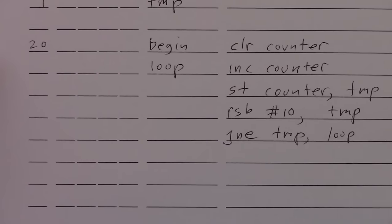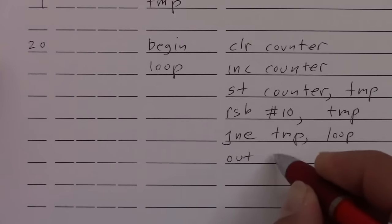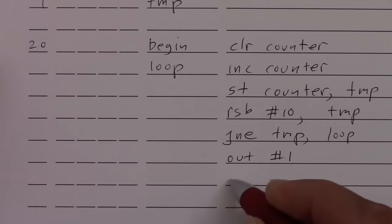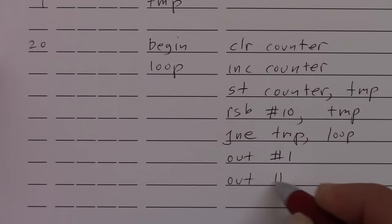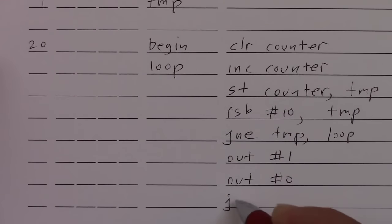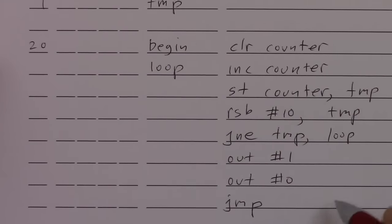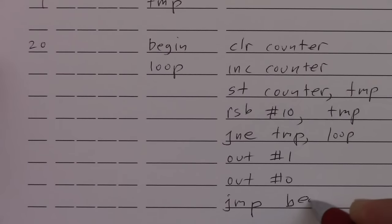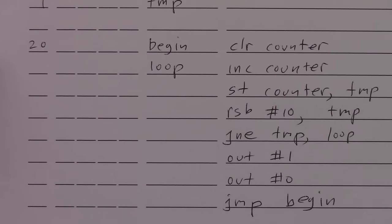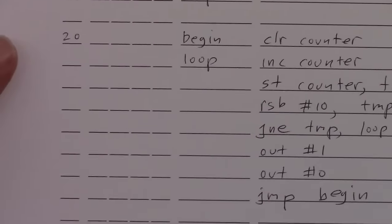So when we're done with the loop, what should we do? Well, let's set an output bit. We'll set it to one and then we'll immediately set it back to zero. And then let's repeat the whole thing. So we'll go back to begin. Okay. So now we have to assemble this.